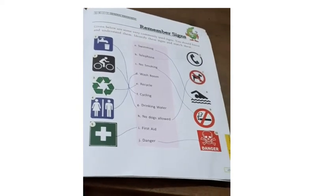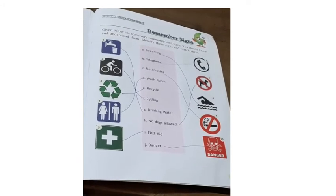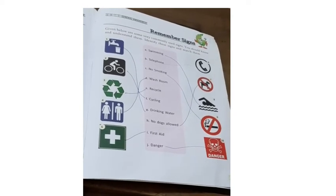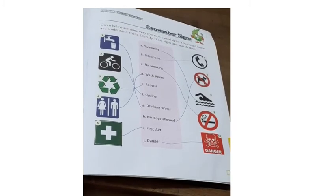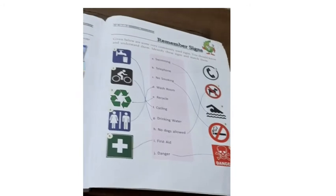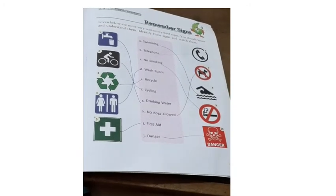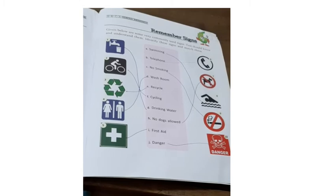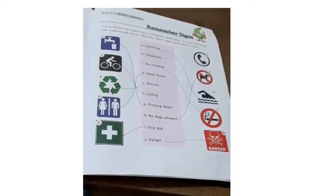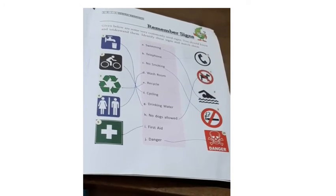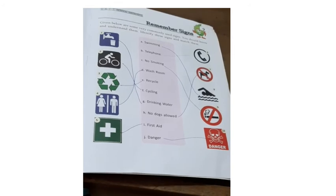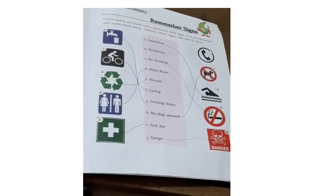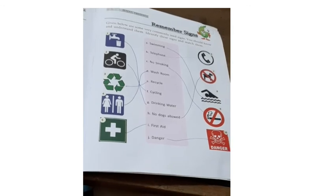We will see these symbols in our surroundings — they each have a meaning. Washroom symbols are found in schools, public places, and malls. First aid kit symbols are found in schools, companies, and all kinds of places. Telephone symbols, no dog allowed symbols in some places, swimming pool symbols, and no smoking symbols can be seen in theaters, companies, and schools.